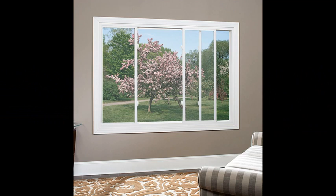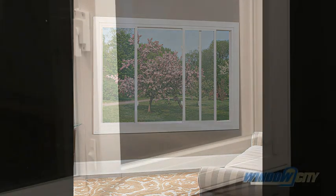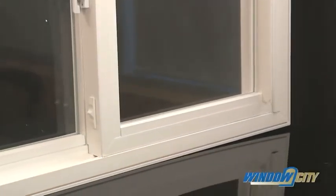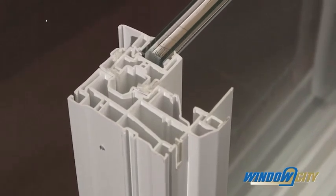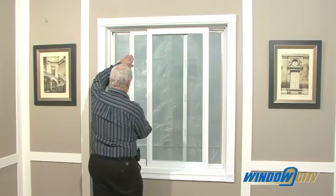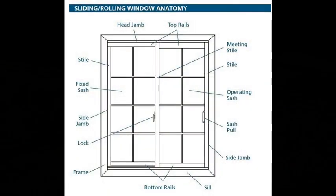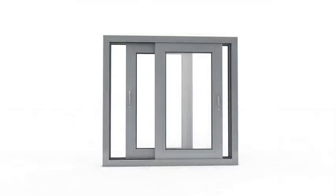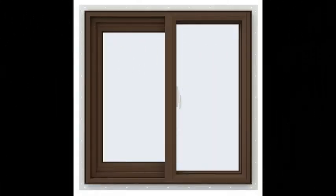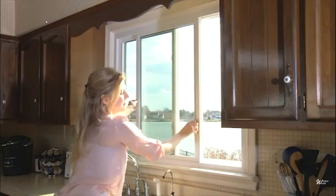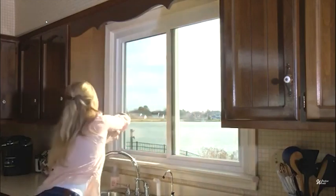The reason for the slider's popularity is very simple: it is a very cheap window to produce, easy to install, takes up minimal space, and is very easy to operate. It consists of two sashes that slide horizontally — left to right or right to left. In many instances only one sash slides and the other is fixed. This is a very easy window for older people to operate because it is a simple sliding motion and does not take a lot of upper body strength — important for people with arthritis or limited hand movement.